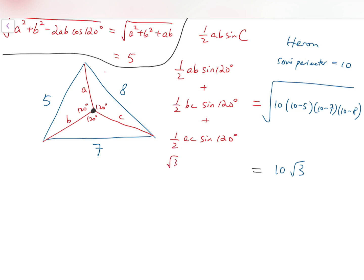So, root 3 over 4 times ab plus bc plus ca. So, I have this expression on ab, bc, ca, to be equal to 40.